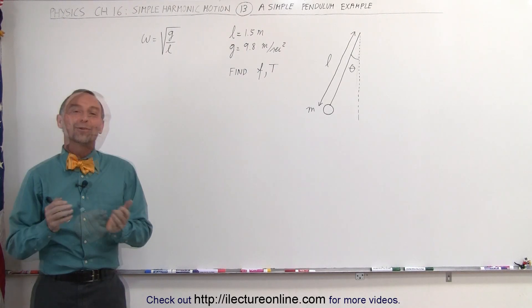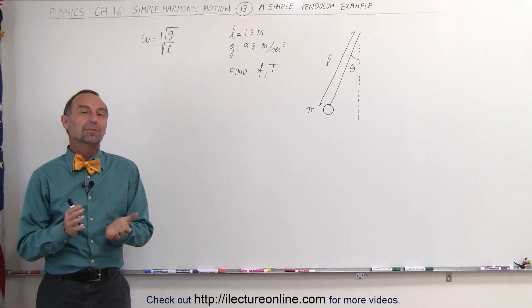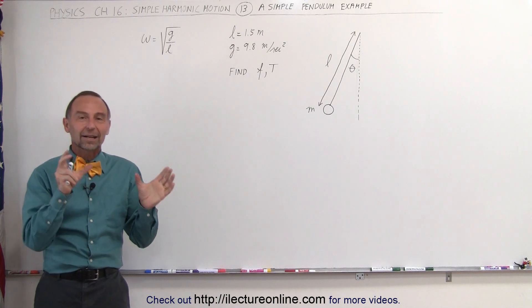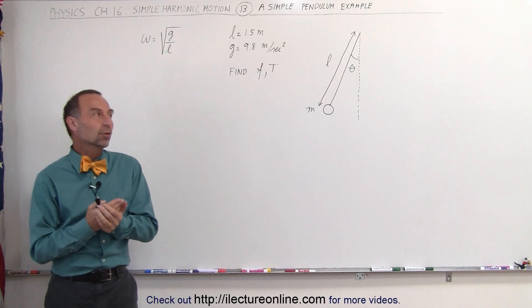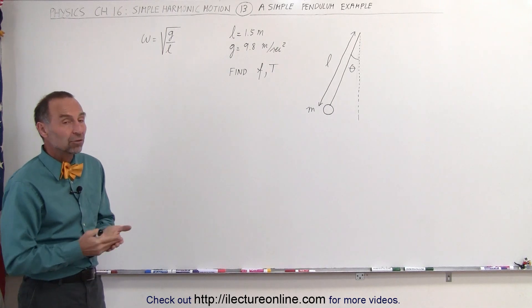Welcome to Electurnal Line. So far in this series we've been looking at simple harmonic motion with a spring and an object attached to the spring, but there's other ways in which we can have simple harmonic motion, such as a simple pendulum.